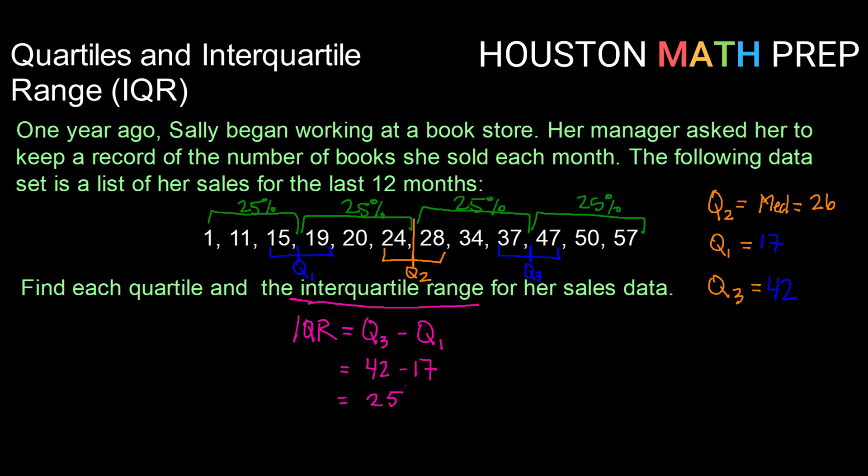So Sally's book data interquartile range is 25. The middle 50% of the data falls from 17 to 42. It has a 25 book span in this case. All right, guys, that does it for this video. We'll catch you in the next one.